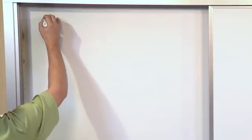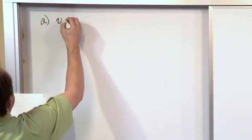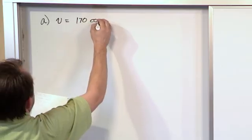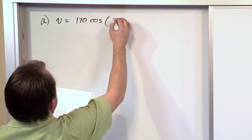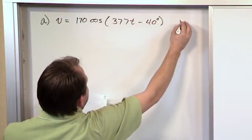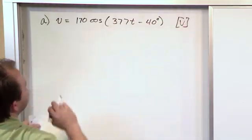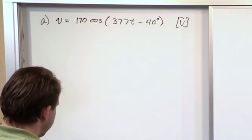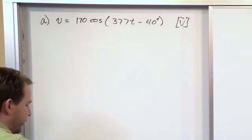So what if I had some voltage V is 170 times the cosine of 377t minus 40 degrees, and that is in volts. What if I said write the phasor notation of this? Very simple to write the phasor notation.